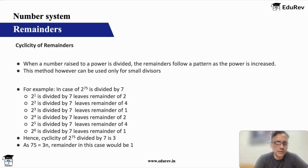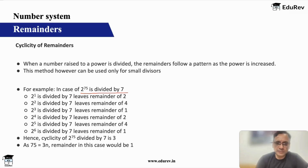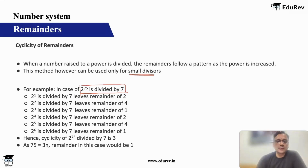For example, I have shown here for power of two divided by seven. Basically when I say cyclicity, when a number raised to a power is divided, the remainder follows a pattern. This method, however, can only be used for small divisors. So let us say two to the power 75 divided by seven — this is the question.